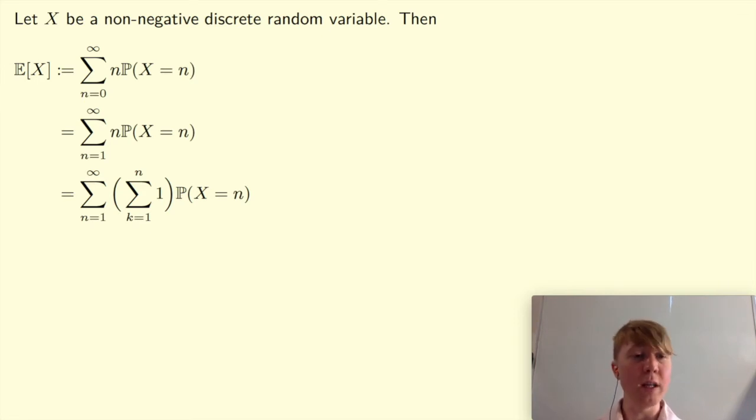And we don't really need to have the 1 in there, and we don't really need to have the brackets, so let's just rewrite this now as a double sum. So the sum over n equals 1 to infinity, and then the inner sum from k equals 1 to n, the probability X equals n. So there's nothing there in the sum that actually depends on k, but that doesn't really matter.